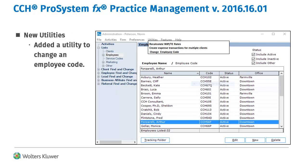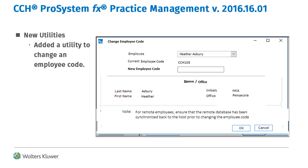There is a new utility available in the Administration module to change an employee code. This option is found in the Utilities menu. However, you cannot use a code that has previously been assigned to an employee. The utility is quick and easy to use — just use the new employee code box to enter a new code.